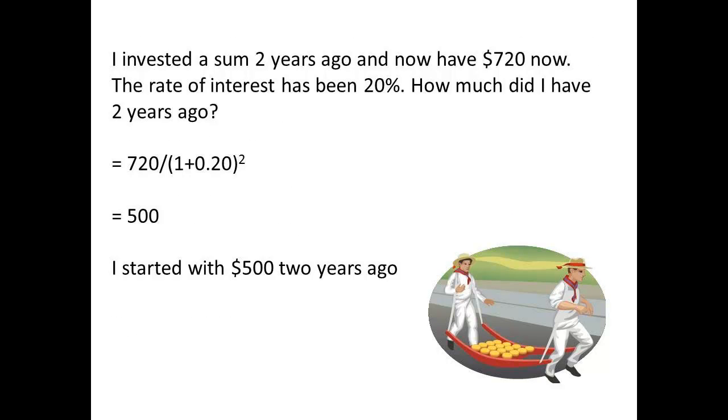Again, we need to be able to carry out the reverse operation. If we now have $720, and the rate of interest has been 20% over the two years, then how much did we start off with two years ago? We divide the 720 by 1.20 to the power of 2. This gives us an answer of 500. So we started with $500 two years ago.